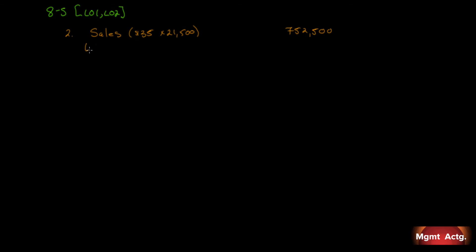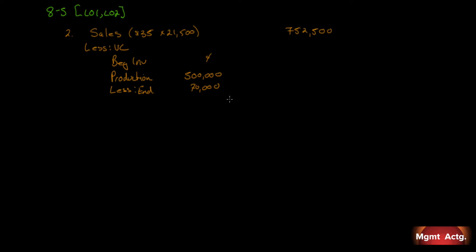Since this is a contribution format income statement, next we subtract all variable costs. For variable cost of production: beginning inventory was zero, we produced 25,000 units at $20 per unit giving $500,000. Ending inventory is 3,500 units at $20 = $70,000. So variable production costs applied to sales are $430,000.